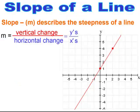Slope describes the steepness of a line. The symbol for slope is a lowercase m, so mathematically we'll be using m to represent slope. When we're looking for the slope of a line from one point to the next, we'll be looking for the vertical change, or our y values, over the horizontal change, or our x values.